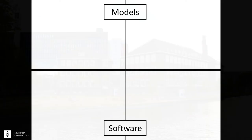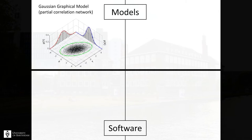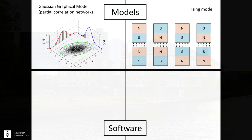So in this video I'll talk a bit about models and software, and mainly I'll discuss two types of models. I'll discuss the Gaussian graphical model, which is a partial correlation network, where all the edges represent partial correlations, and I'll discuss the Ising model, which is also an undirected network but for binary data. This comes from physics, where it's used to model magnets.